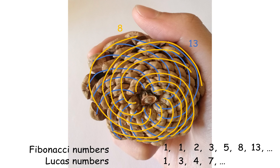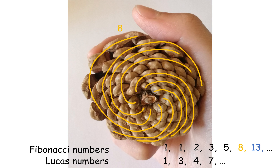In this case, our pine cone is spanned by approximately 8 clockwise and 13 counterclockwise spirals. It actually has 9 clockwise spirals, which makes it not perfect. But that's okay, because it's approximately 8, and approximation is what matters, as you will see next.